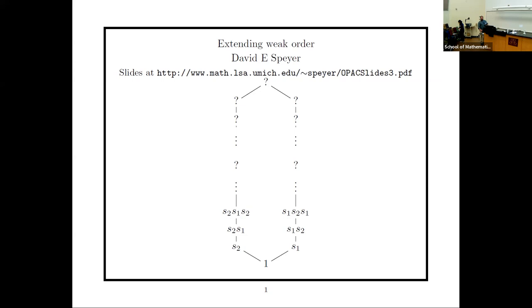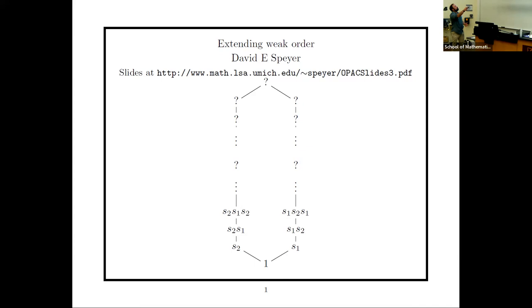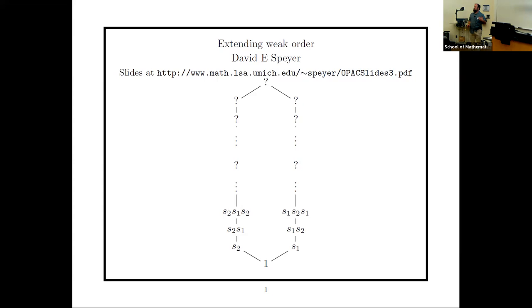Thank you to all the organizers and everyone who came — it's so good to be back talking math with all of you and hearing about new problems. This talk is about how to put Coxeter groups and weak order on Coxeter groups inside some larger structure. The bottom half of the picture is the weak order on the affine symmetric group of rank two, and the top half has question marks — this talk is about what to put above there. Compared to other talks, this is a structural talk, not an enumerative one.